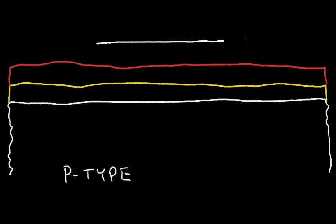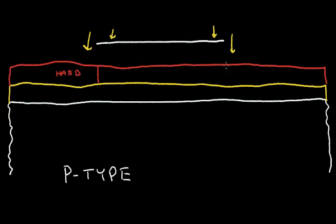This masking layer will have a dark part and a transparent part. What I want to do is shine light from the top and expose the photoresist. Where I have the masking layer, the light is blocked by the mask.